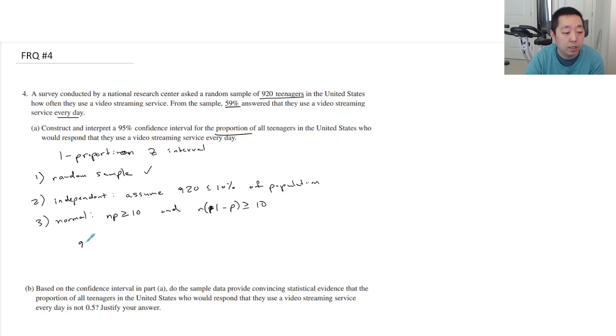So we have 920 times 0.59 is 543. That's greater than or equal to 10, check. And then N times 920 times 0.41 is 377, greater than or equal to 10, check.